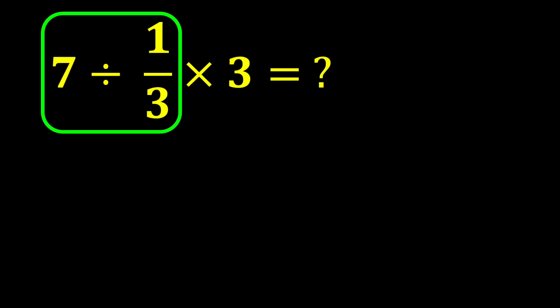7 divided by 1 over 3. To solve this part, we use the KCF rule. K stands for keep, C stands for change, and F stands for flip. The KCF rule is a simple rule for dividing fractions. According to this rule, we keep the first number as it is, change the division sign to multiplication, and flip the second number.